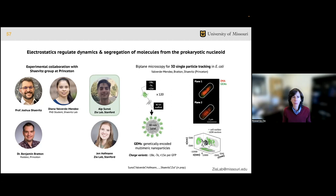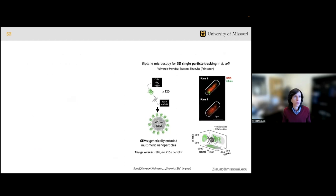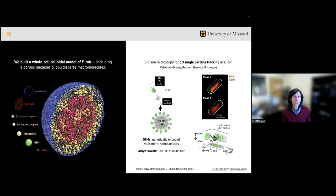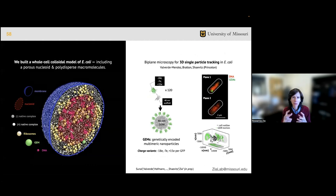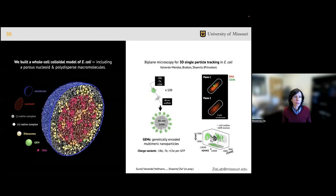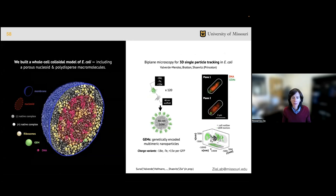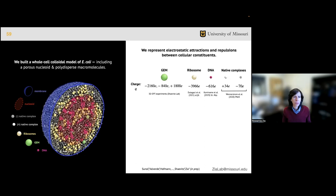Everything you see here experimentally is coming from the Shevitz group in work done by Dr. Valverde-Mendez recently graduated from Josh Shevitz group. In tandem with their experiments, we built a coarse-grained whole cell model of E. coli which includes a spherically confining membrane, a porous nucleoid - the genetic material in basically a network - and freely mobile cytoplasmic complexes. This also includes gems, the tracking particles being used by the Shevitz group. Molecular characteristics, including size, abundance, and charge, were set in our simulations according with literature values. What I'm going to highlight is where Jennifer and Alp developed the electrostatic interaction model, where particles either attract or repel based on their relative sign and magnitude of charges.